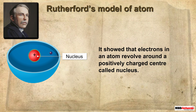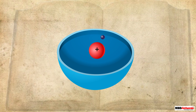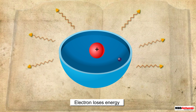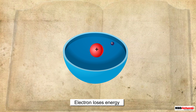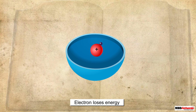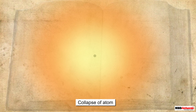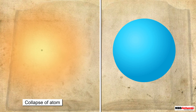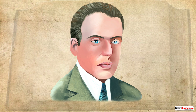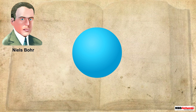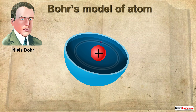However, it was later found that any particle in circular motion would undergo acceleration and thus would lose energy. So the electron would take a spiral path and would finally fall into the nucleus, and the atom would collapse. But this does not take place in reality. Bohr said that electrons do revolve around the nucleus.